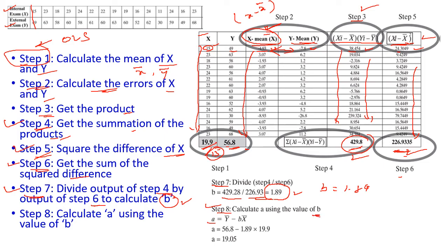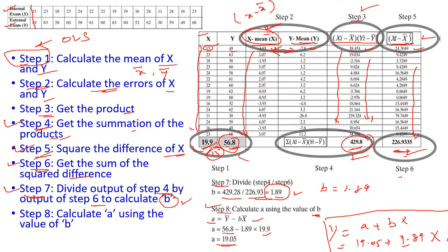Now we compute a using the formula: a = ȳ − b·x̄. We already have ȳ, b = 1.89, and x̄. The result is a = 19.59. So the regression equation becomes y = 19.05 + 1.89x. This is the result of our problem, and with it we can reduce the errors.